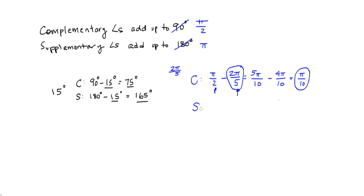What about supplementary? For degrees, we subtracted from 180, but now we're talking about radians, so we're going to subtract from 180 degrees worth of radians, which is pi minus 2 pi over 5.